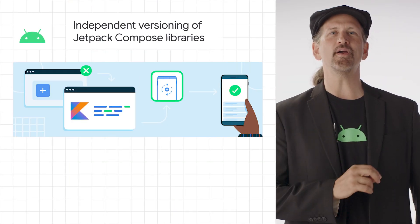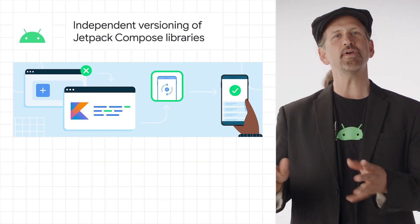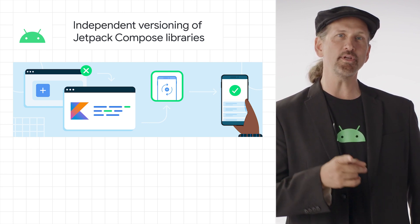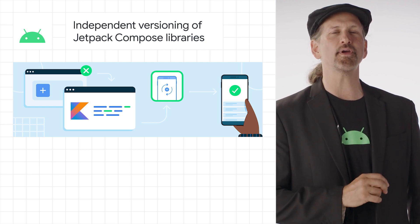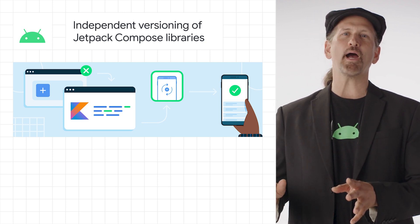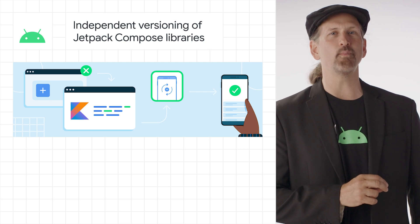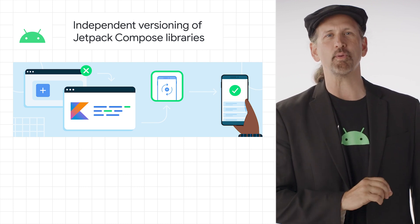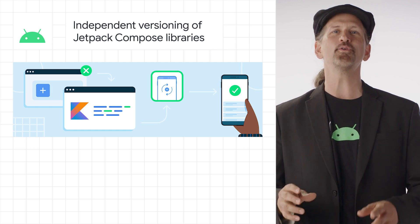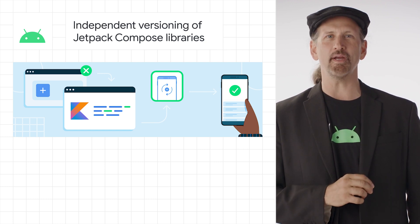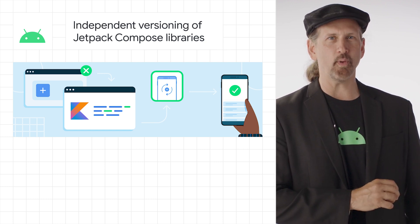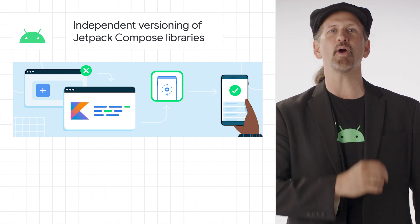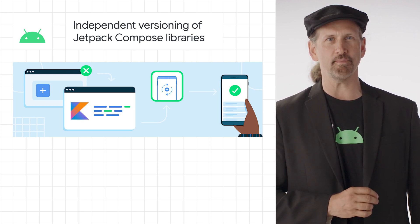We announced that the various Jetpack Compose libraries are moving to independent versioning schemes, beginning with the Compose compiler, which is tightly coupled with the Kotlin version. Compose Compiler 1.2 brings support for Kotlin 1.7, while being both backwards and forwards compatible with the Compose UI libraries and the Compose Runtime library. You can upgrade your Compose compiler to 1.2 stable and use Kotlin 1.7 while leaving your other Compose libraries on their current version.